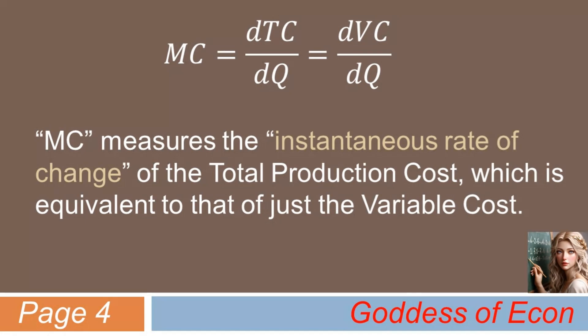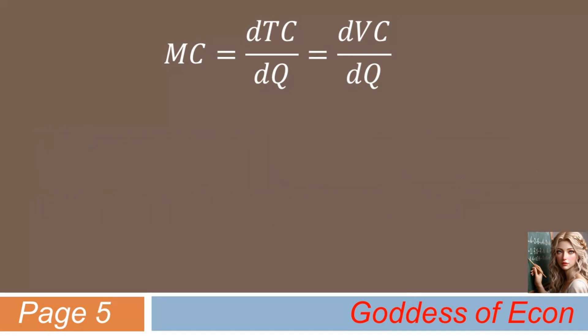And now let's recall what the variable cost meant in the case of just one input, labor. Under this simplifying assumption, the variable cost is just the wage rate times the unit of labor employed. That is, w times L.